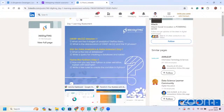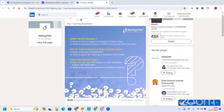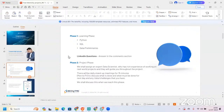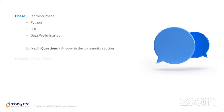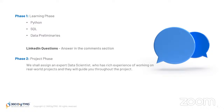After this, once we complete this work process — which will last for 20 days — we will have the second phase: the project phase. In the project phase, we will assign you an expert data scientist who has rich experience working on real-world projects, and they will guide you throughout the project.